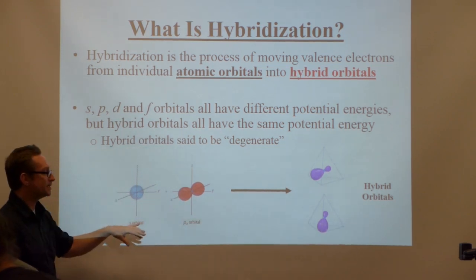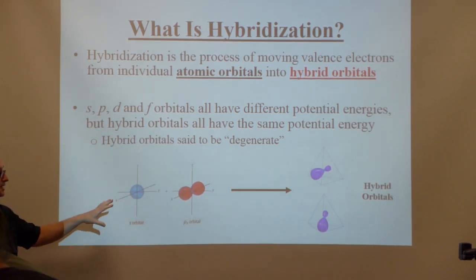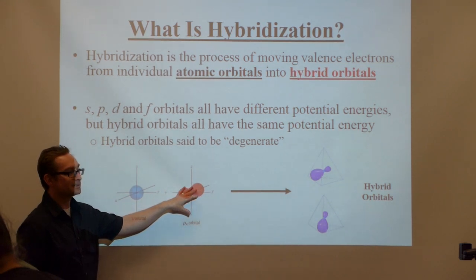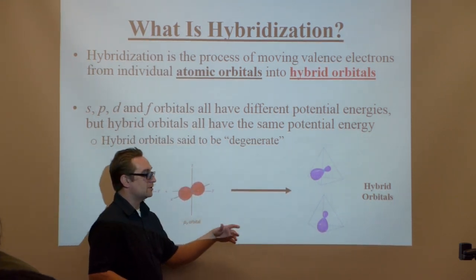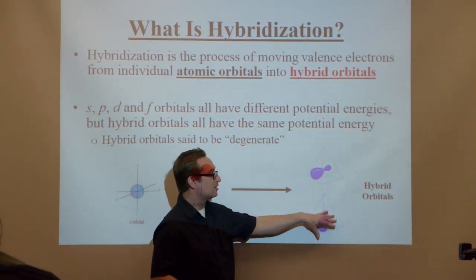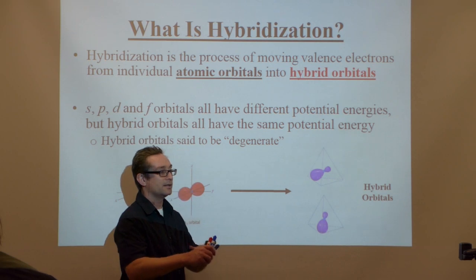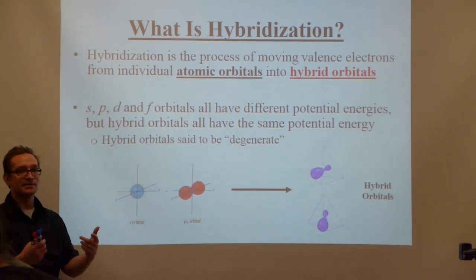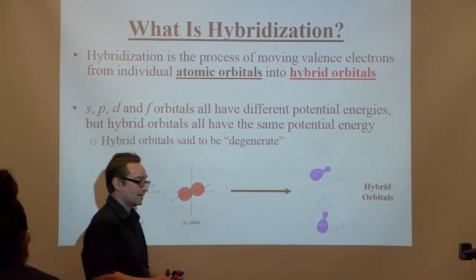This picture is a nice schematic of what hybridization is. It's taking individual atomic orbitals and making them all the same so that all the bonds around methane, for example, can be the same.